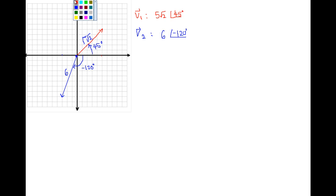So like we were saying before, do not add 5 radical 2 to 6. What you need to do is break the components down to x and y components for each one.